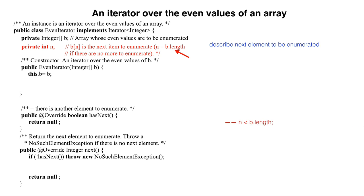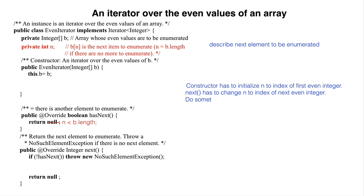With that field, it's easy to complete function hasNext. The constructor must initialize field n to the index of the first even element.